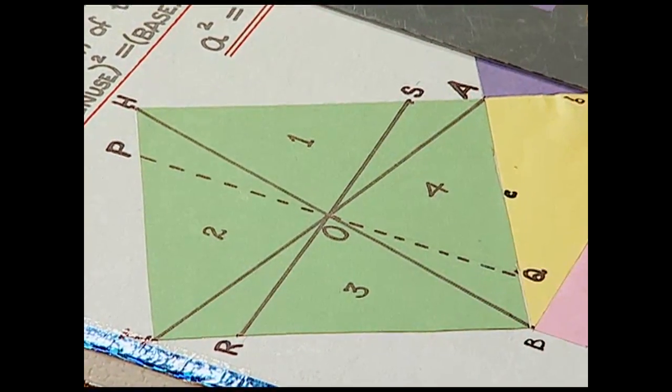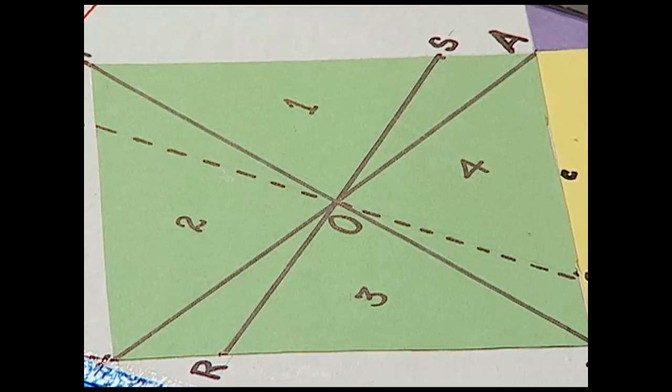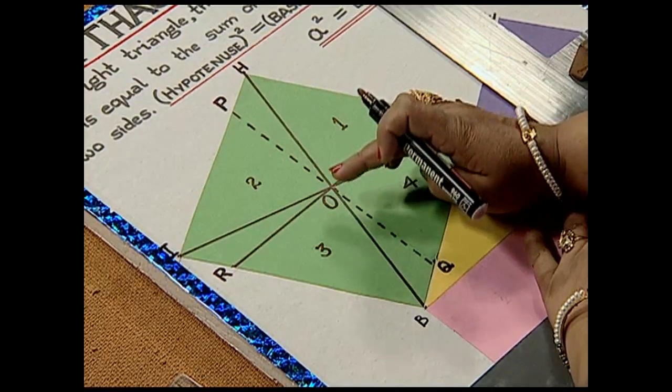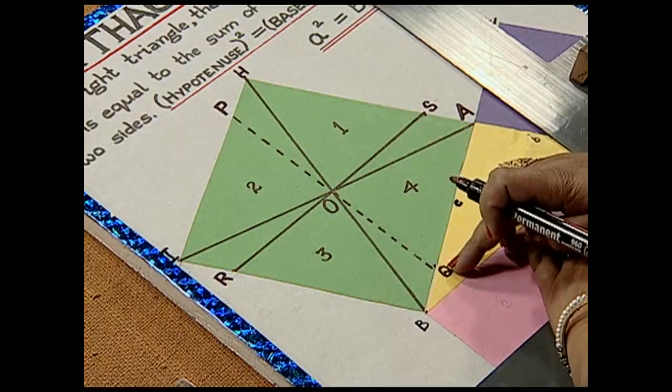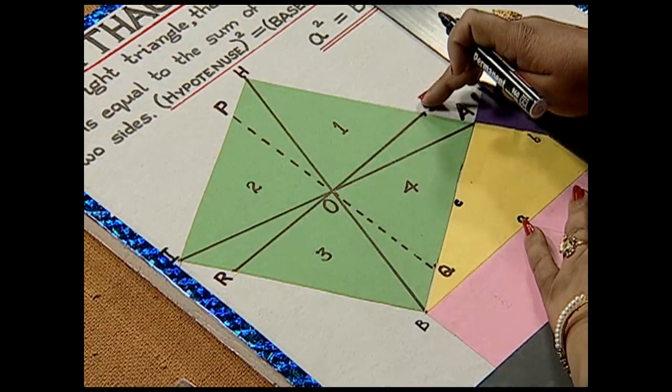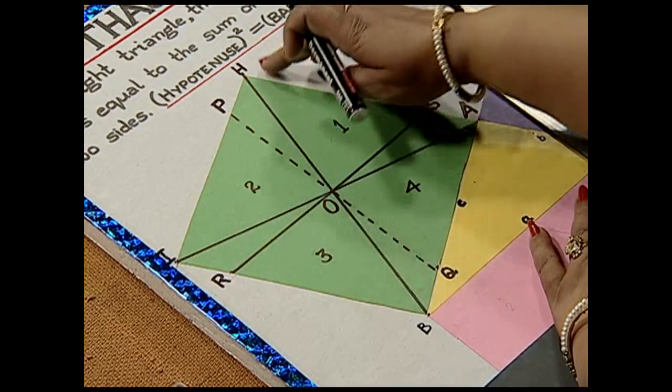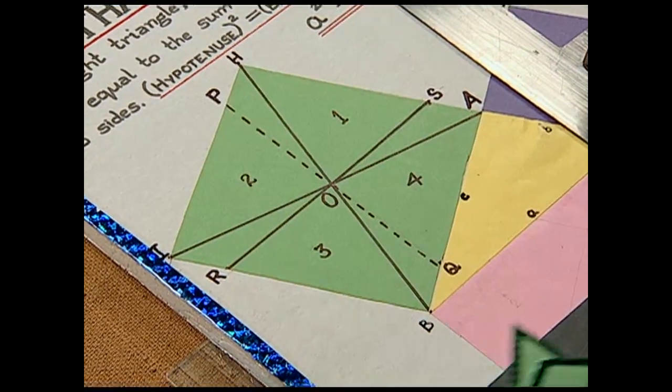What do you observe? We observe that we obtain four quadrilaterals, namely PIRO and ORBQ and BOSA, also OSHP. This way we have prepared cutouts of these quadrilaterals.